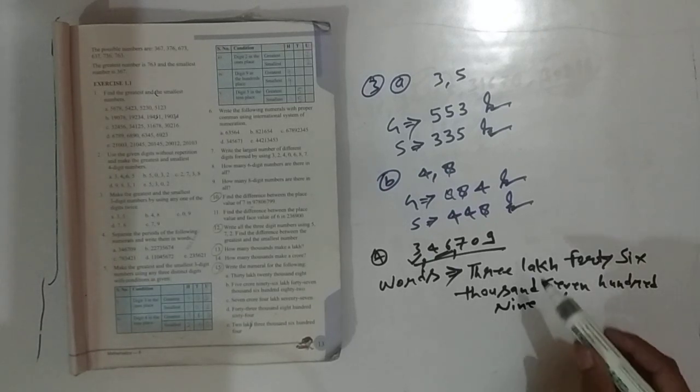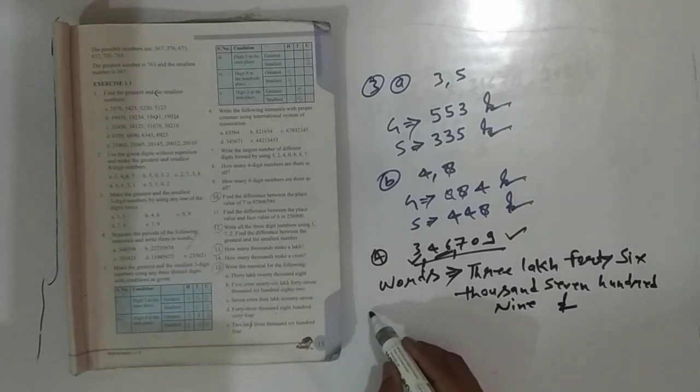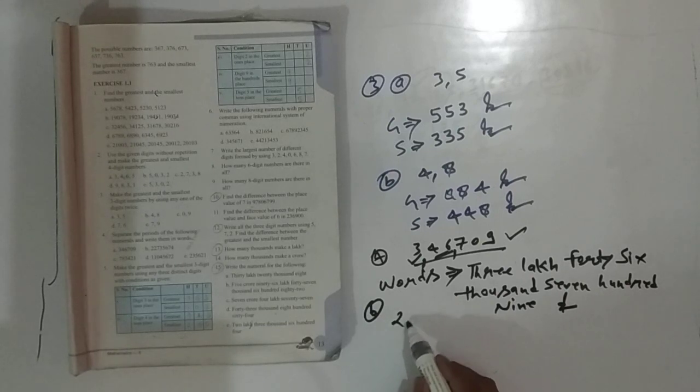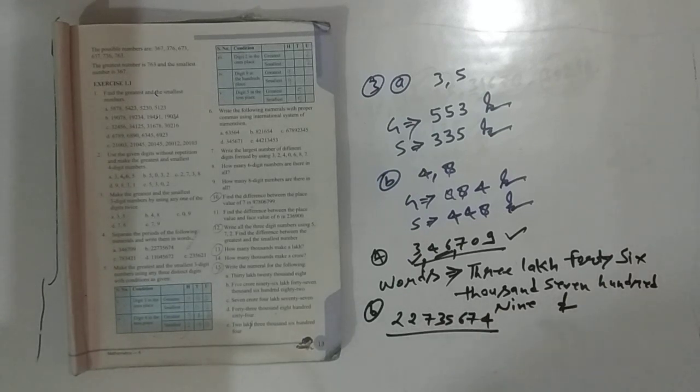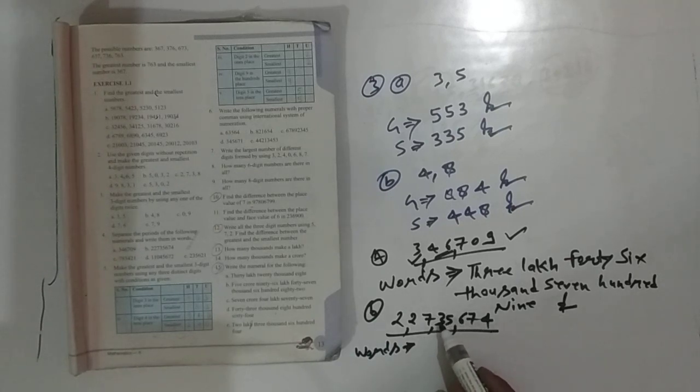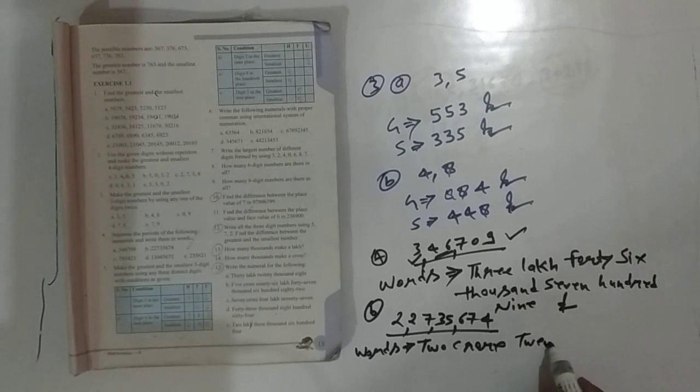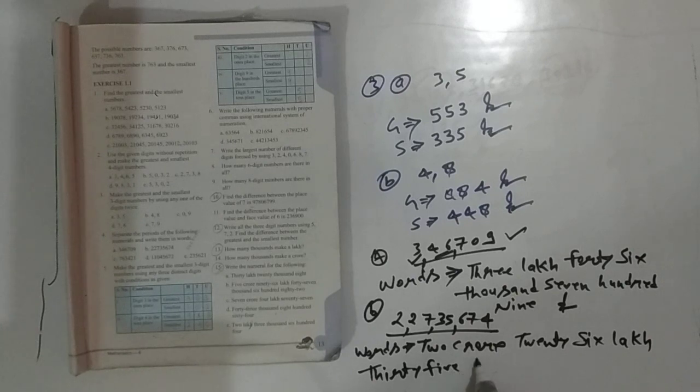For the next number, you need to write it in place values: ones, ten, hundred, thousand, ten thousand, lakh, ten lakh, crores. Two crores, twenty-six lakh, thirty-five thousand, six hundred seventy-five. That is the answer.